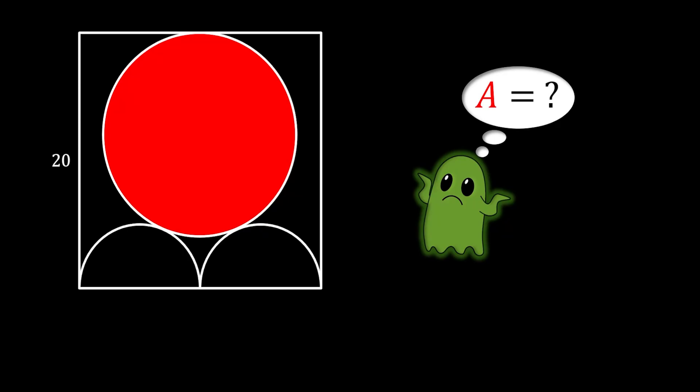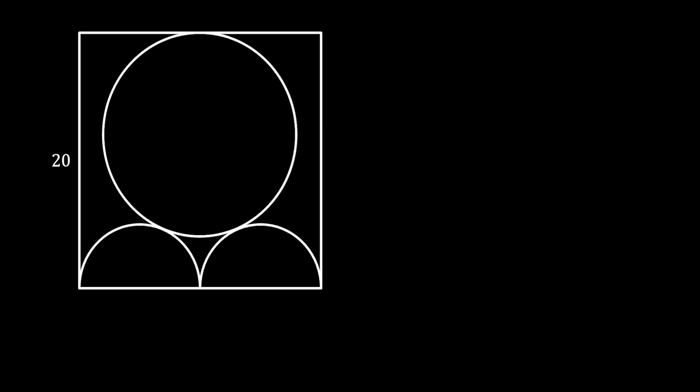Alright, let's solve this problem. First, for better understanding, I'm going to label all the vertices of our square as A, B, C, and D, and I will label the center of our inner circle as O.